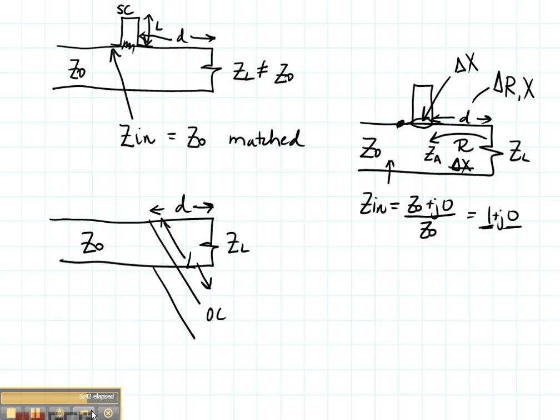So there are several things that we need to learn in order to do this. One is how to add series elements. Another is what it means to rotate and design a single stub matching network. We also need to know how to make a short circuit or open circuited line act like the imaginary part that we want. So that's what we're going to be working on in the next several set of slides.